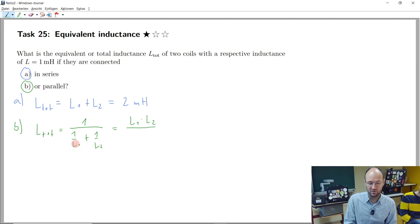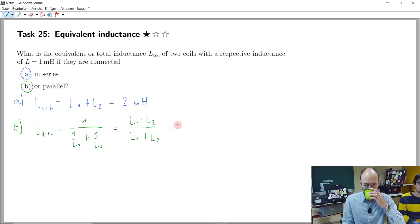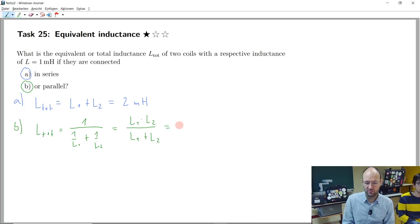And if we do it in the denominator, the L1 will cancel here, L2 will cancel there, so we will get L1 plus L2. And if we insert the values here, exactly, we will get half of them. So we will get 0.5 mH in this case.